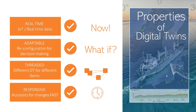Desired properties of a digital twin are: it tells me what happens right now; it allows me to study what-if scenarios; it consists of different smaller systems; and when the system changes, the digital twin changes as well. Let's apply that idea to the ocean.